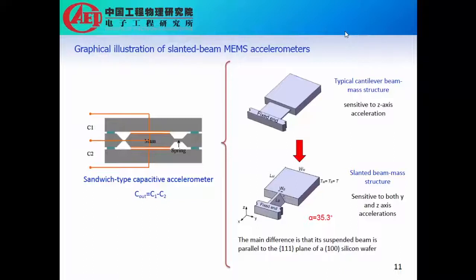This slanted beam MEMS accelerometer is also using this kind of sandwich type structure, but the main difference is that the slanted spring is parallel to the {111} plane of a silicon wafer, which is determined by the single-crystal silicon orientations. For a typical cantilever beam-mass structure, it is only sensitive to z-axis accelerations. But for this slanted beam-mass structure, it is sensitive to both y-axis and z-axis accelerations.